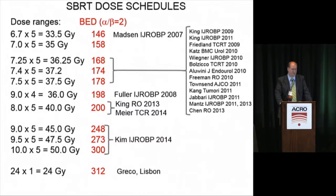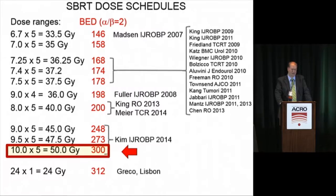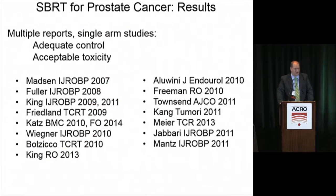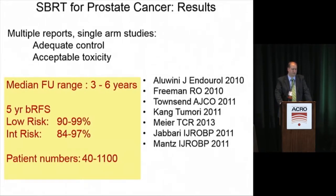Different fractionation schedules have been used, ranging from 6.7 gray times 5 developed by the Swedish Cancer Institute in Seattle — intended as an equal-potent regimen to 78 gray in 2 gray fractions — all the way up to 10 gray times 5 from UT Southwestern, reflecting Dr. Timmerman's cowboy mentality. Most data clusters in the range of 7.25 to 8 gray times 5.